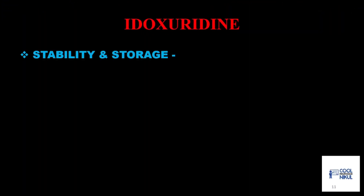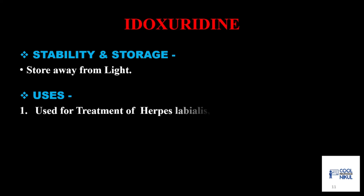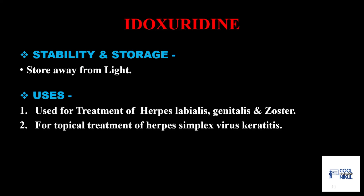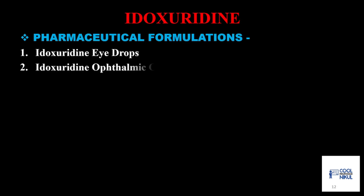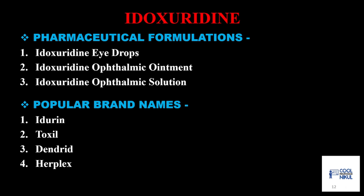Idoxuridine: stability and storage — store away from light in light-resistant containers. Uses: herpes labialis, herpes genitalis, herpes zoster, and herpes simplex virus keratitis. It is available in eye drop form, ophthalmic ointment, and ophthalmic solutions. Brand names are Idurine, Dendrite, and Herplex.